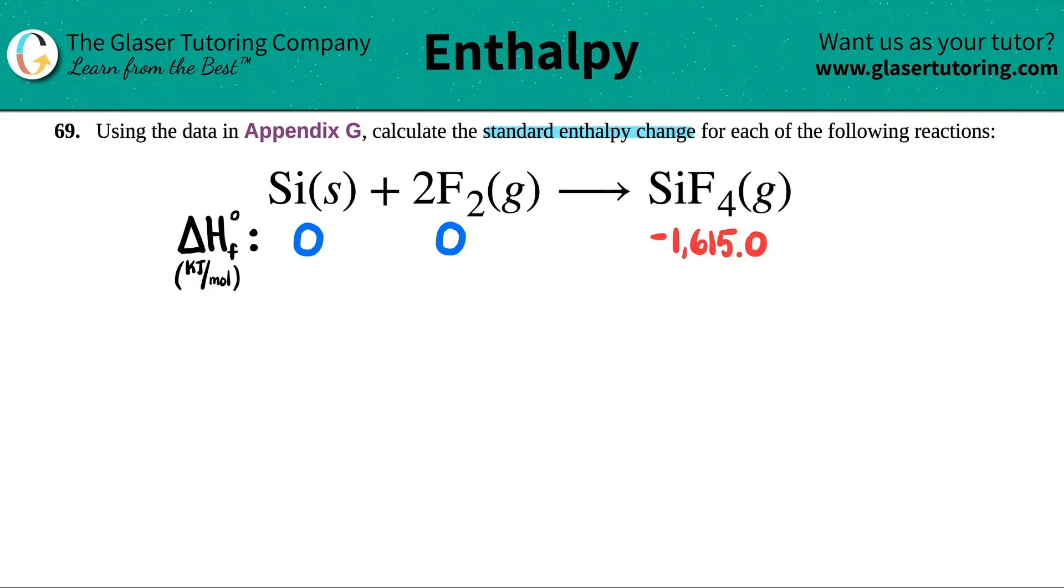Now what I did for you guys is I already went into Appendix G and I wrote down the enthalpies for each component. Just know that when they're looking for enthalpy, they're looking for delta H. You're going to see on these Appendix that there's like a delta G and there's an S value. We only care about the delta H values because that's enthalpy, heat energy.